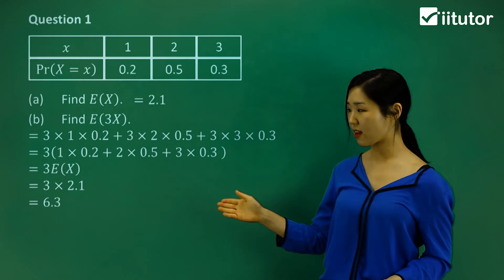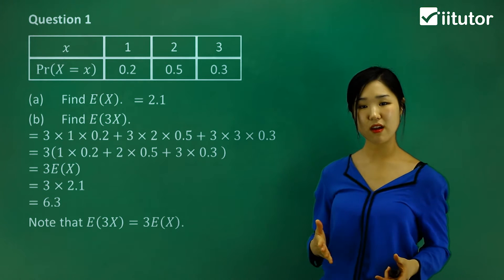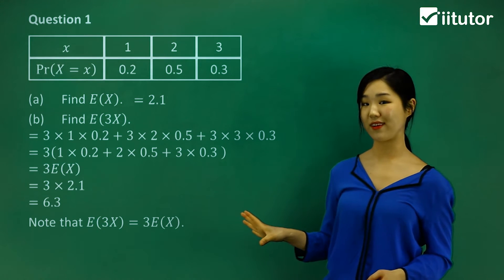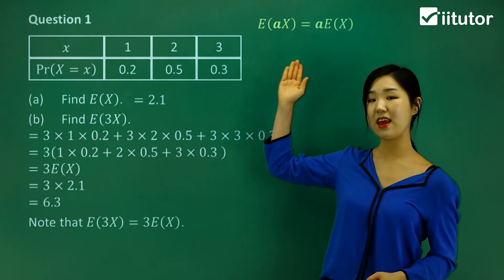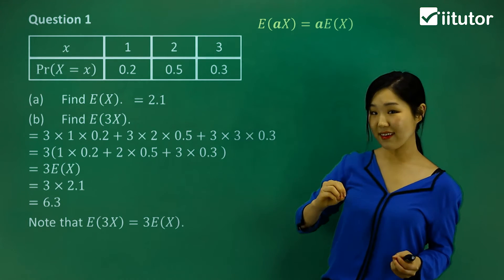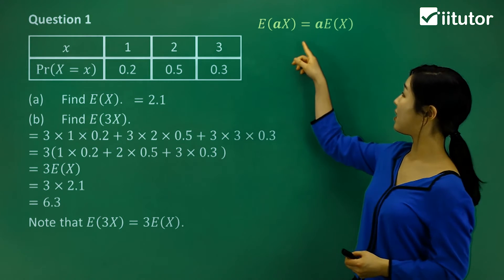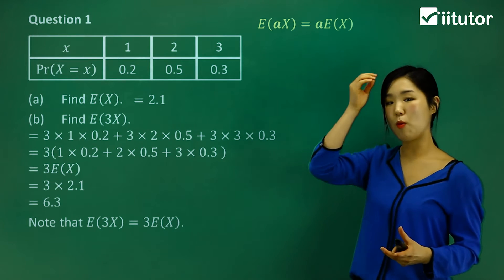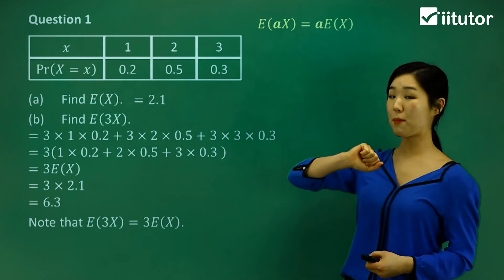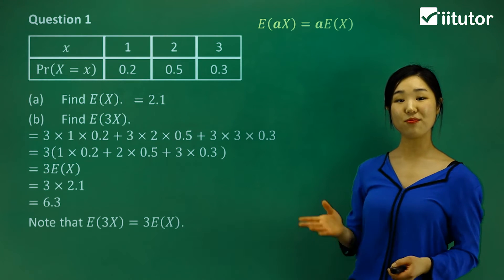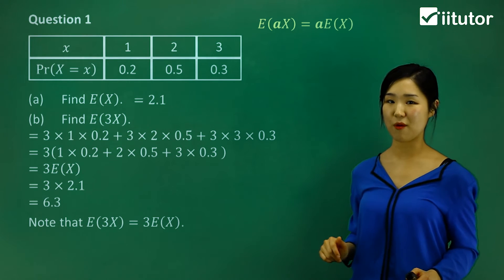Through factorization, we can see that expected value of 3x equals 3 times our expected value of x. This relates to our first expectation theorem: E(ax), where a is some constant multiplied by x, can just pop out to the front, becoming a times E(x). So whenever x is multiplied by a constant, just take it out to the front as a coefficient. Please try to remember that, because you'll be using it a lot.